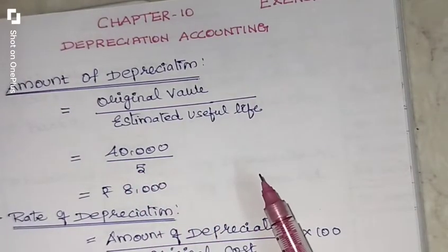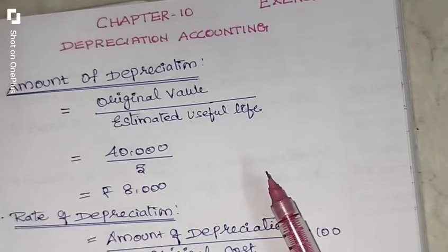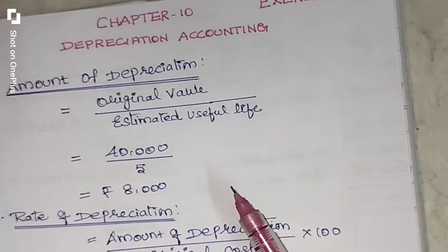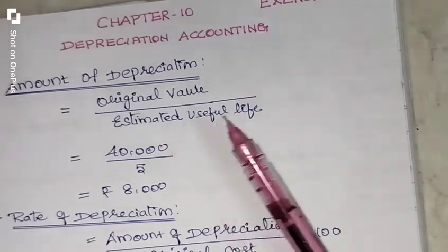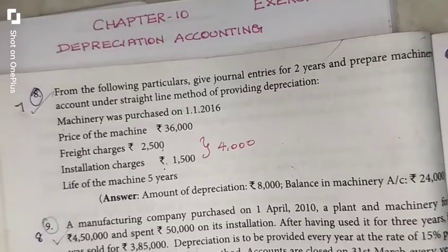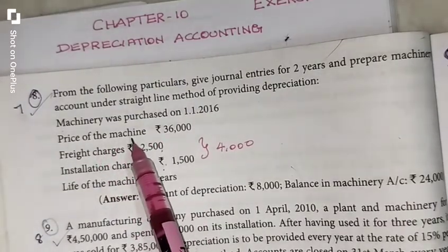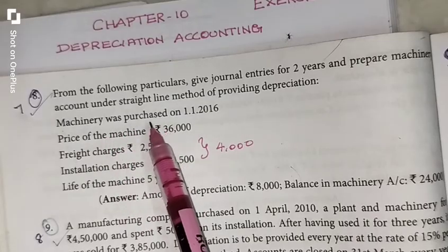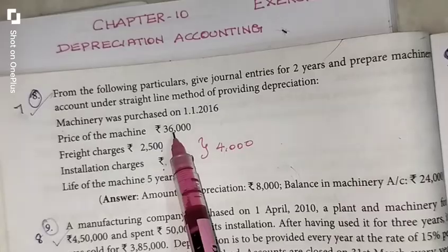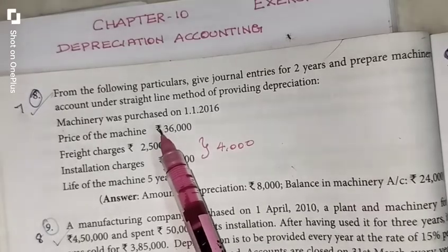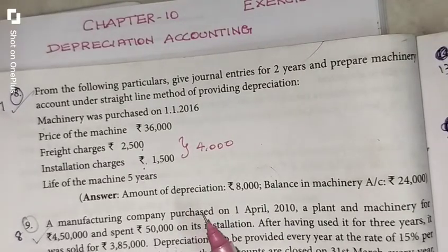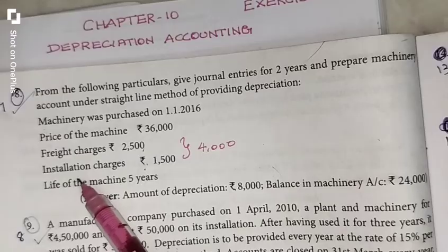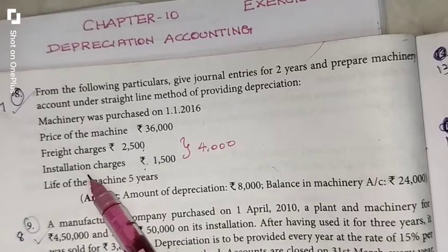First we have to find the amount of depreciation. The formula for amount of depreciation is: original value divided by estimated useful life. To calculate original value, the machinery was purchased at Rs. 36,000. When you purchase new assets, you have to spend some money on additional expenses — that is freight charges, installation charges, erection charges, transporting charges, wages, repairs.